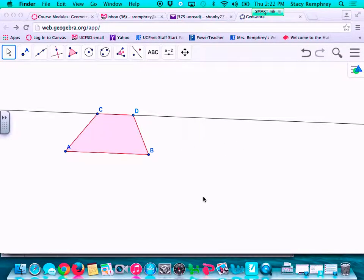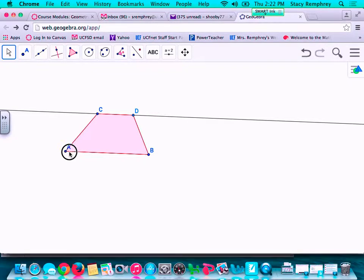Okay, this is the notes for 11-3 area of trapezoids. What you can see here is I made a trapezoid. A trapezoid, by definition, has one set of parallel sides.